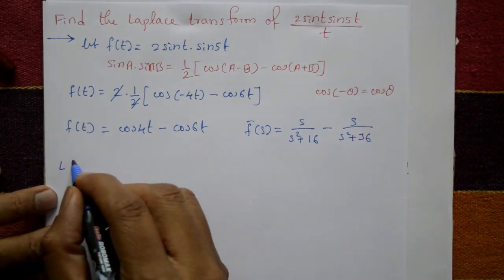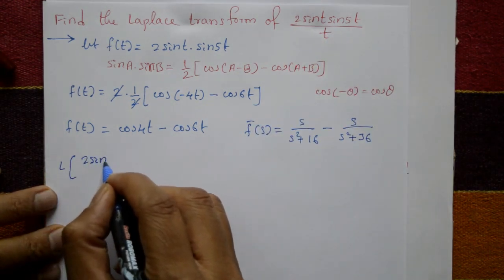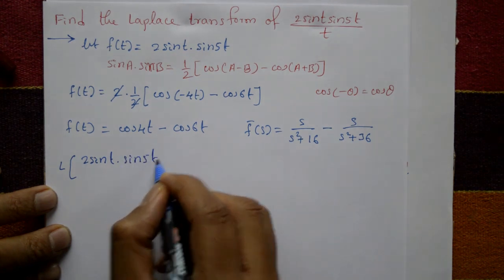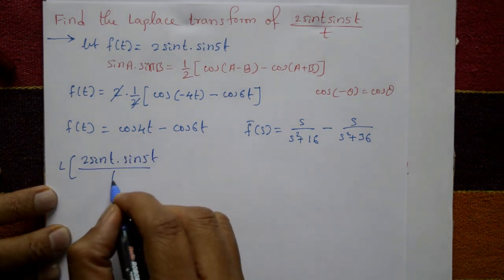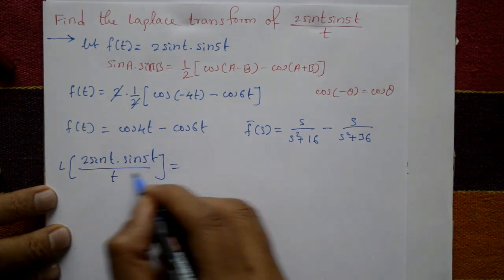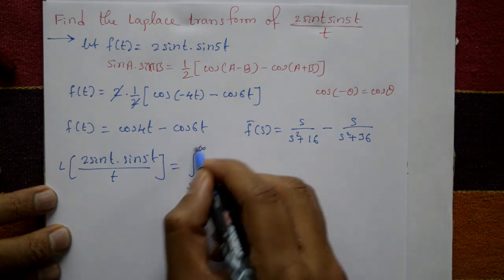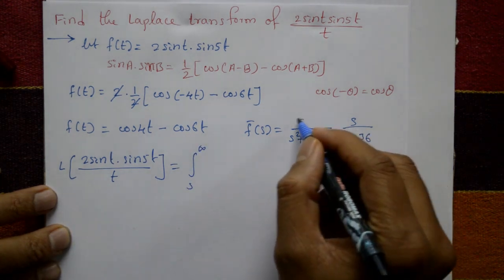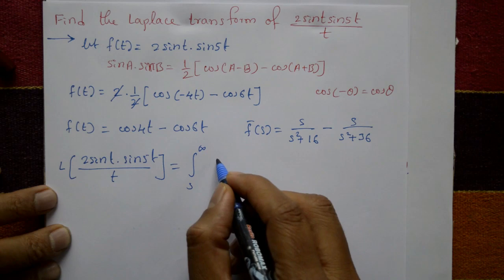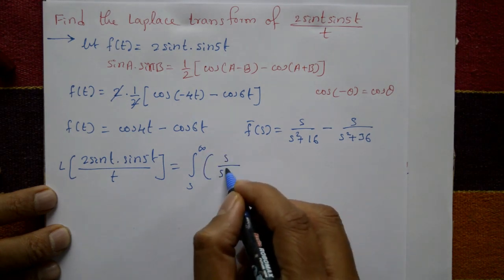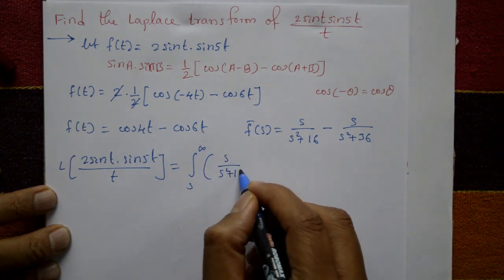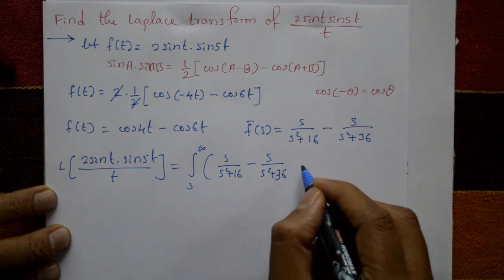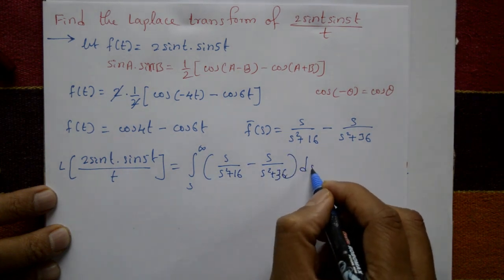Now including the division by t, the Laplace of 2 sin(t) sin(5t) divided by t requires integration from s to infinity of F̄(s), which is the integral from s to infinity of [s over (s² plus 16) minus s over (s² plus 36)] with respect to s.